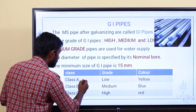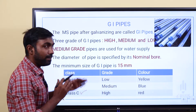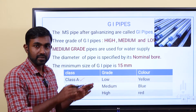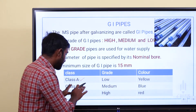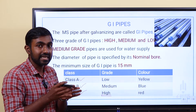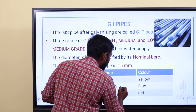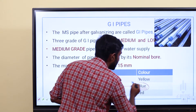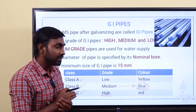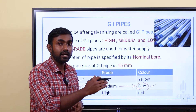Class A is low grade, Class B is medium grade, Class C is high grade. The water supply system uses medium grade, which is Class B. The medium grade color is blue. So the color used in the water supply system is blue — medium grade, Class B.